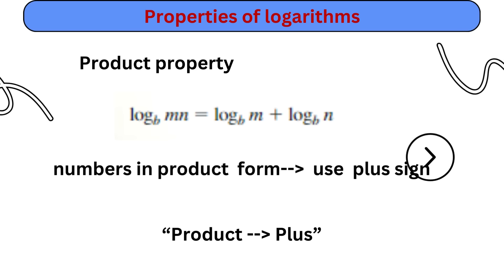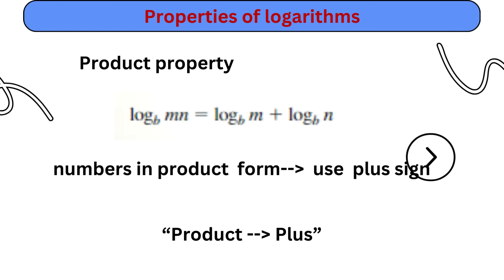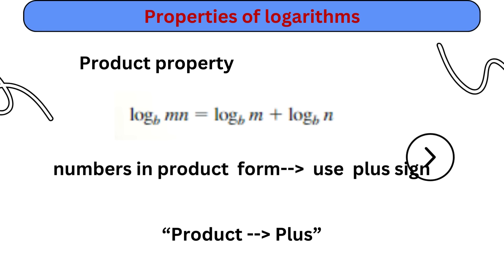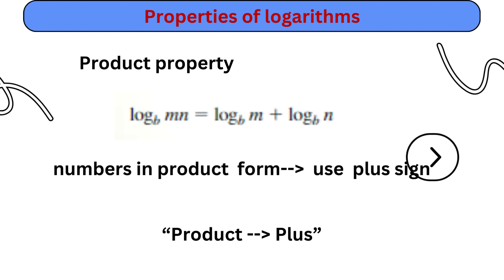Properties of logarithms. Product property: log of mn to base b equals log of m to base b plus log of n to base b. The product of m and n is inside the log function; to separate them, use a plus sign. Remember the phrase: product form — use plus sign to separate the logs, like 'product plus.'